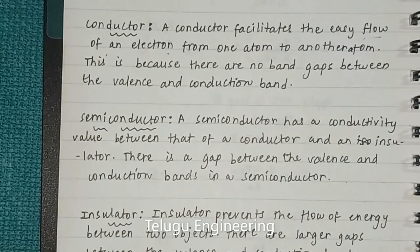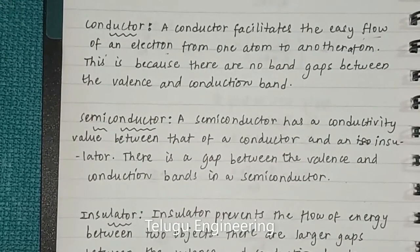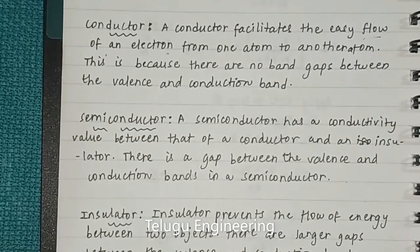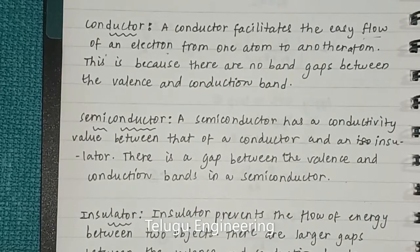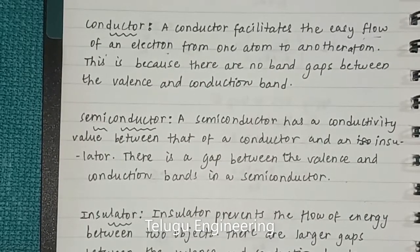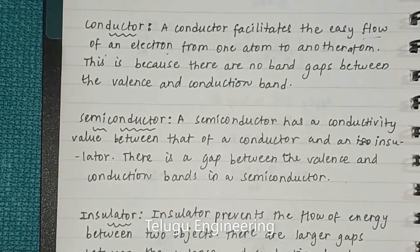Conductors: the valence band and conduction band have no gap. Semiconductors: the valence band and conduction band have some notable gaps. Insulators: there is a larger distance between the valence and conduction bands.